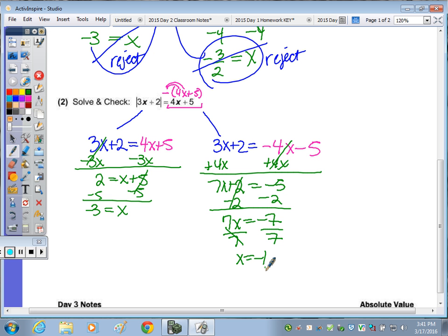Now, to check both of those, I usually set up a T-chart, but since I don't have room, this will be the check for x equals negative 3. So substituting 3 times negative 3 plus 2 is the absolute value of that, equal to 4 times negative 3 plus 5. We do the operations inside first, so negative 9 plus 2 gives us the absolute value of negative 7, which is 7. On the right side, 4 times negative 3 is negative 12, and negative 12 plus 5 is negative 7, which does not check. So we reject the negative 3.